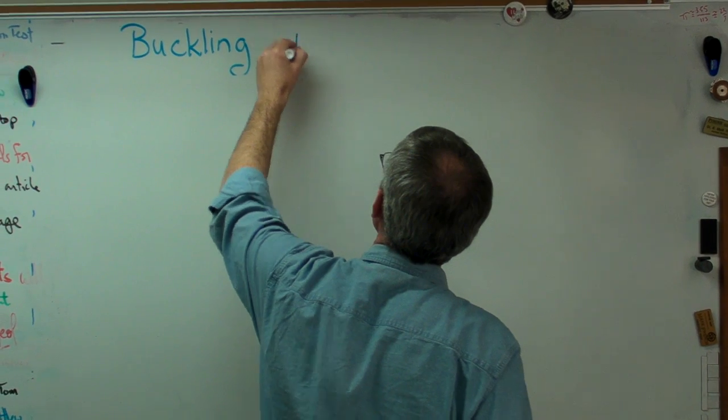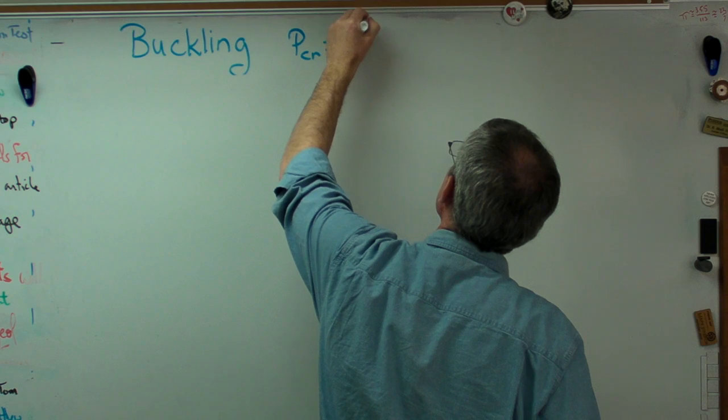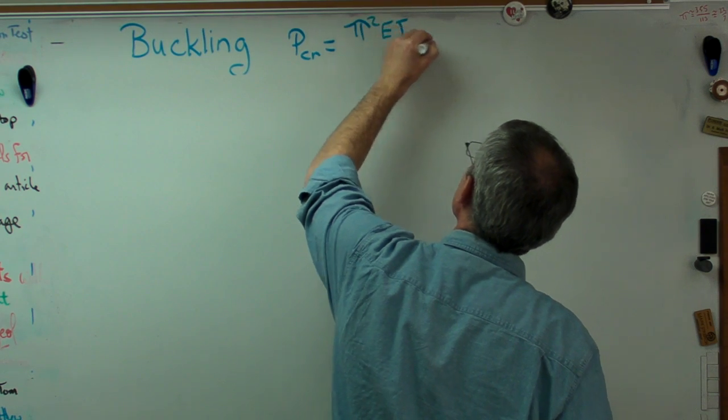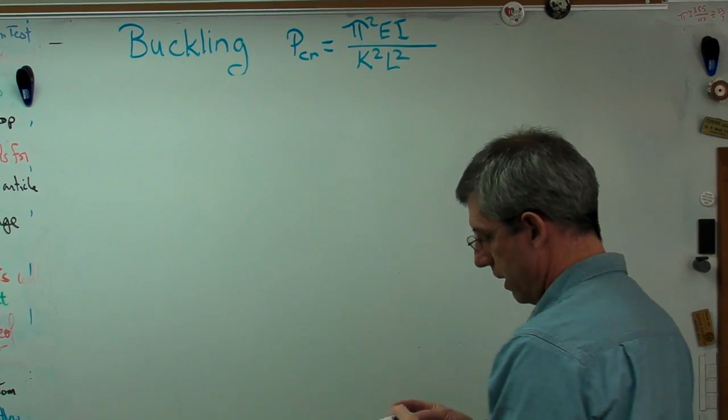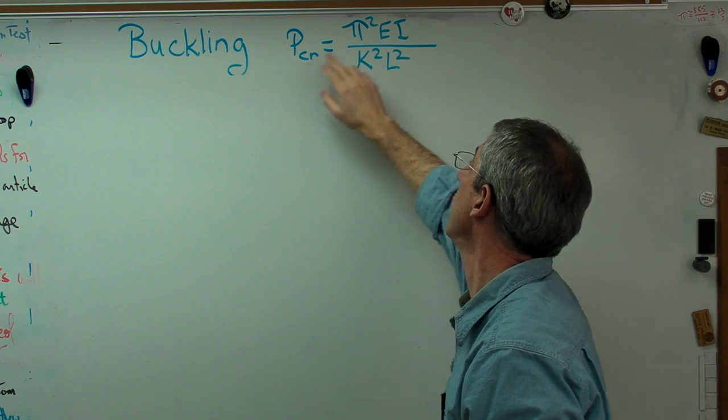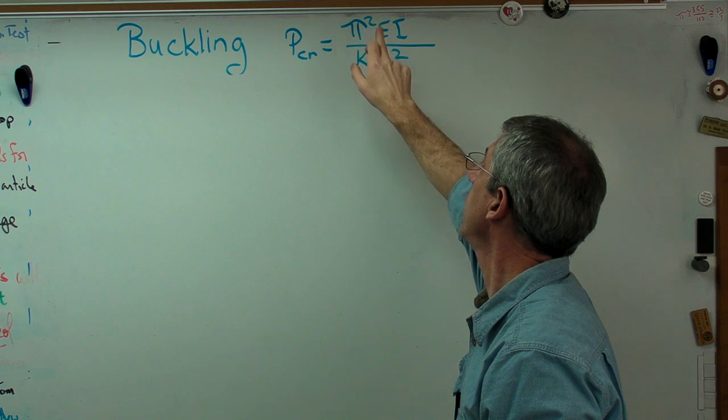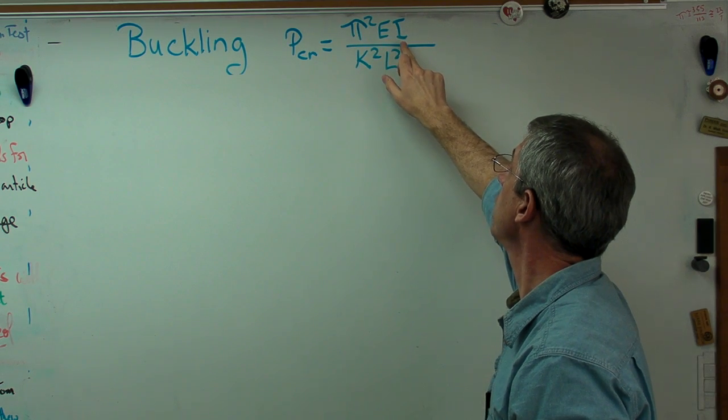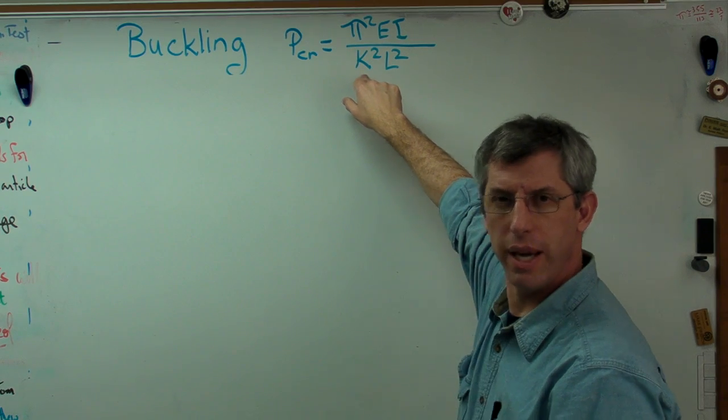The Euler buckling equation is written this way. Okay. Pcr critical, the critical load, the load required to cause a column to buckle is equal to π² times E times I. That's just a number. The elastic modulus, area moment of inertia divided by the length squared times k squared.